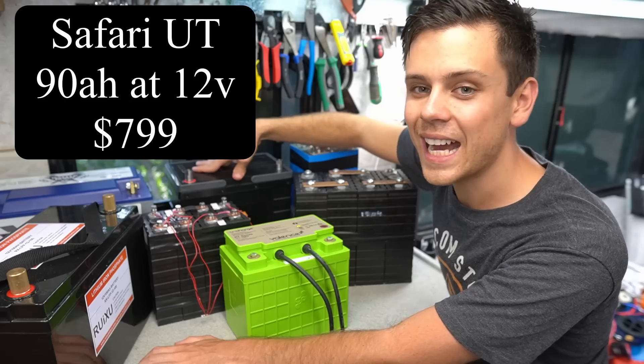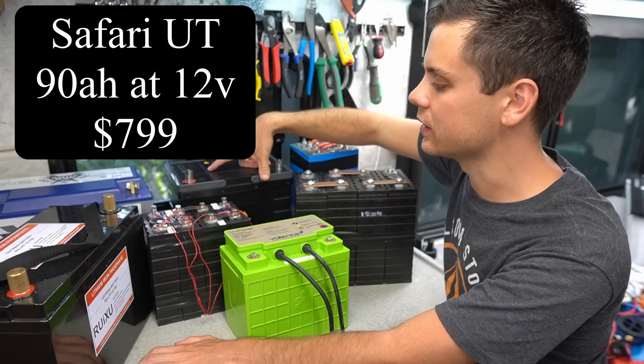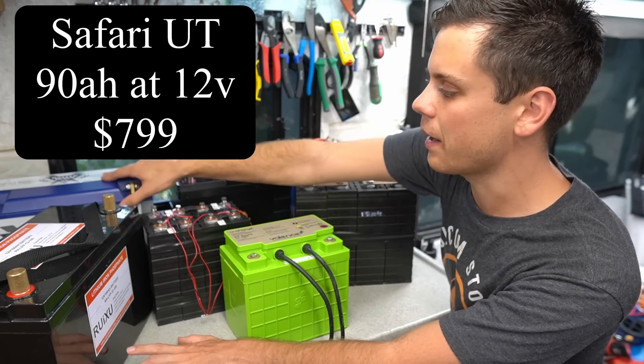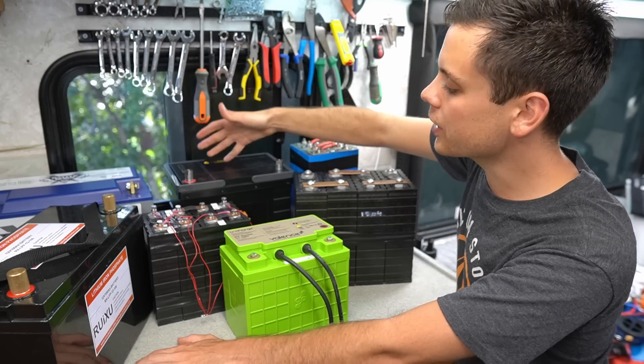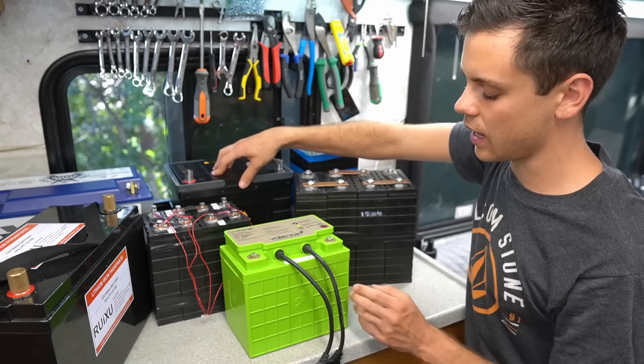The Safari, you get only 90 amp hours at 12 volts. You have prismatic aluminum case cells inside and for the price it's about the same as a Battleborn because for 90 amp hours it's $800. So it's pretty pricey but it's a pretty cool battery. It has some interesting features that the other ones don't have.